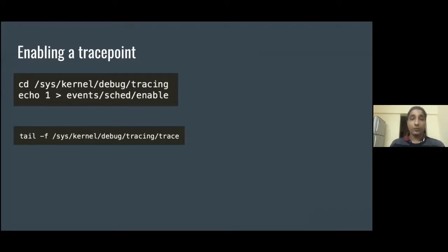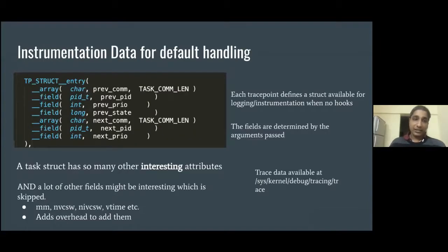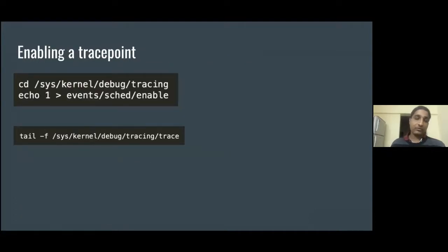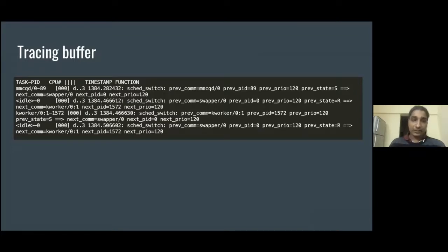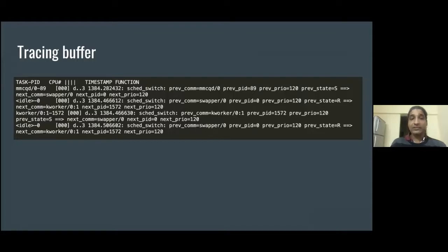If we define a particular hook for a particular trace point, then we can get our own type of logging. But by default, the kernel will use the information contained in TP_struct_entry in the logs. This is what the logs look like in the tracing buffer. As you can see on the right side of sched_switch, we have multiple attributes and their values being logged: the name of the previous process, the previous PID, the priority of the previous process, the state of the previous process, the next process name, next PID, and next priority. This conforms to the information defined in the TP_struct_entry macro.